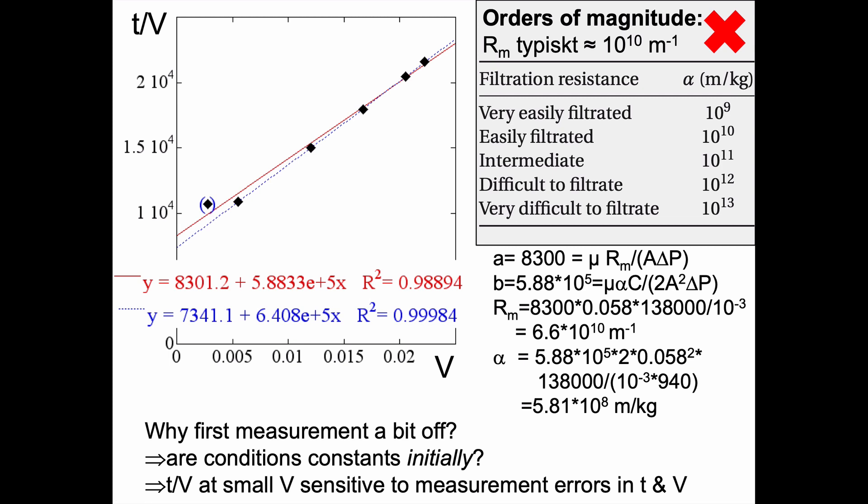Another thing is that t divided by V at small V is sensitive to measurement errors in t and V. But if that was the only explanation, we would expect this point to randomly appear above or below a line through the rest of the points. And this point actually typically occurs or can be found above the line that goes through the other data points. So it's more likely that the conditions are not constant initially. So that's probably the reason.